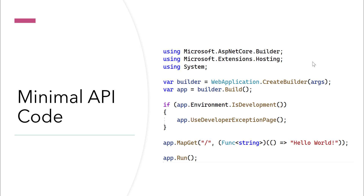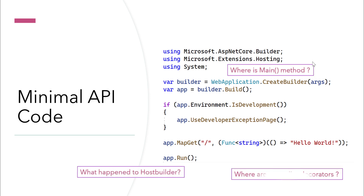There is something like app.MapGet which points to the controller you're talking about. MapGet handles GET requests, and MapPost handles POST requests. You can quickly notice that some things are missing from this code: where is the main method? What happened to the host builder? Where are the controller decorators? All those things are completely gone.